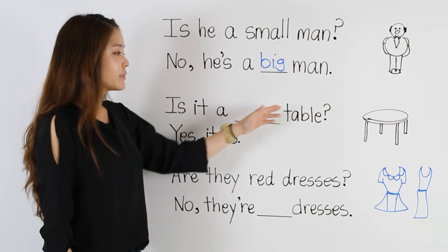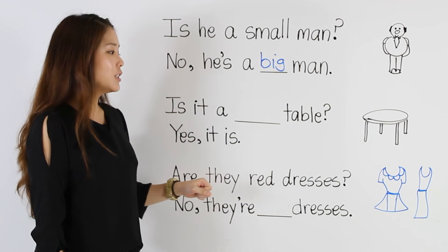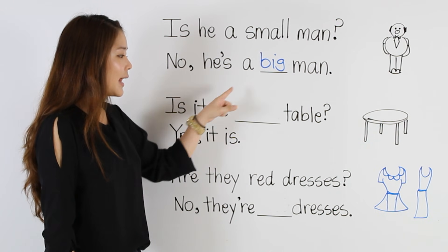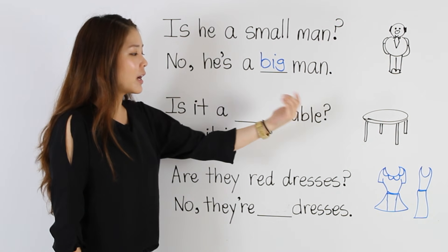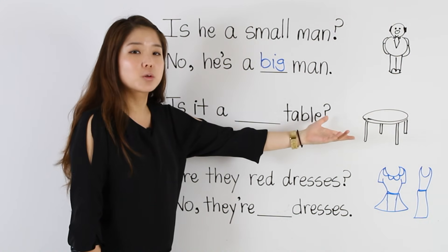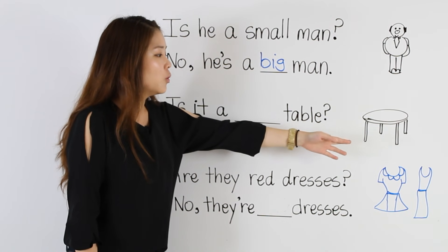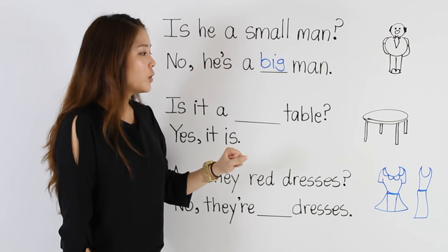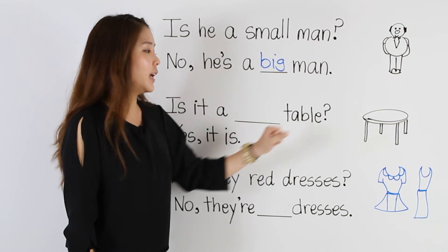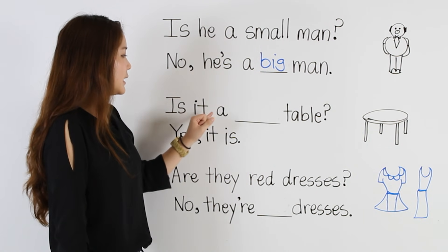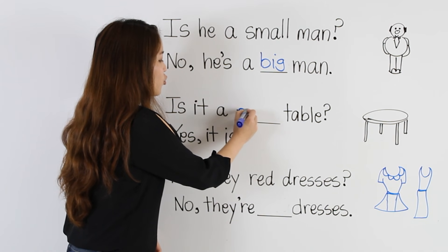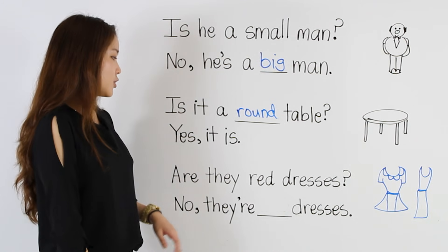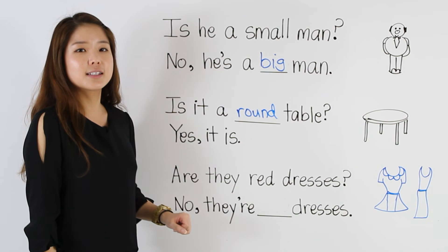Is it a table? The answer is yes, it is. We need an adjective to describe color, shape, or size. We can't really describe the color, so I think we should try the shape. Is it a round table? And the answer is yes, it is.